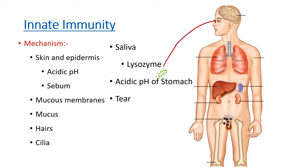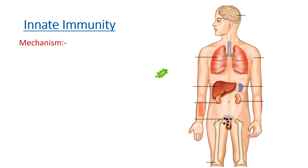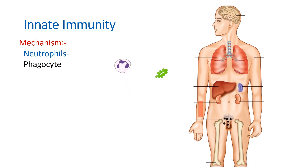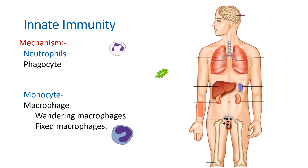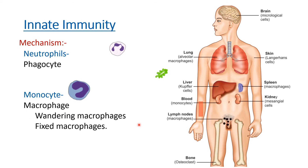Even after all this, if the pathogen still enters the body and reaches the circulatory system — that is, the blood — there will be specific cellular mechanisms. First, neutrophils are released, which act as phagocytes and engulf any bacteria that might have entered. Second, monocytes are activated to form macrophages. Macrophages can be of two types: wandering macrophages, present inside the circulatory system, and fixed macrophages, resident in tissues.